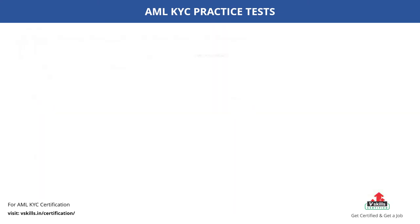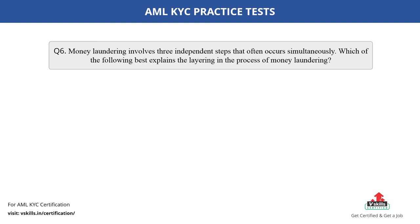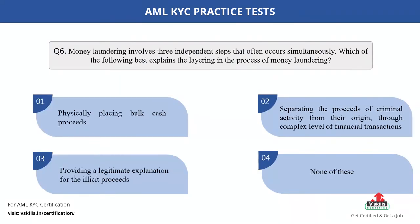Question number 6. Money laundering involves three independent steps that often occur simultaneously. Which of the following best explains the layering in the process of money laundering? The options are: A. Physically placing bulk cash proceeds; B. Separating the proceeds of criminal activity from their origin through complex levels of financial transactions; C. Providing a legitimate explanation for the illicit proceeds; D. None of these. The correct answer is option B.